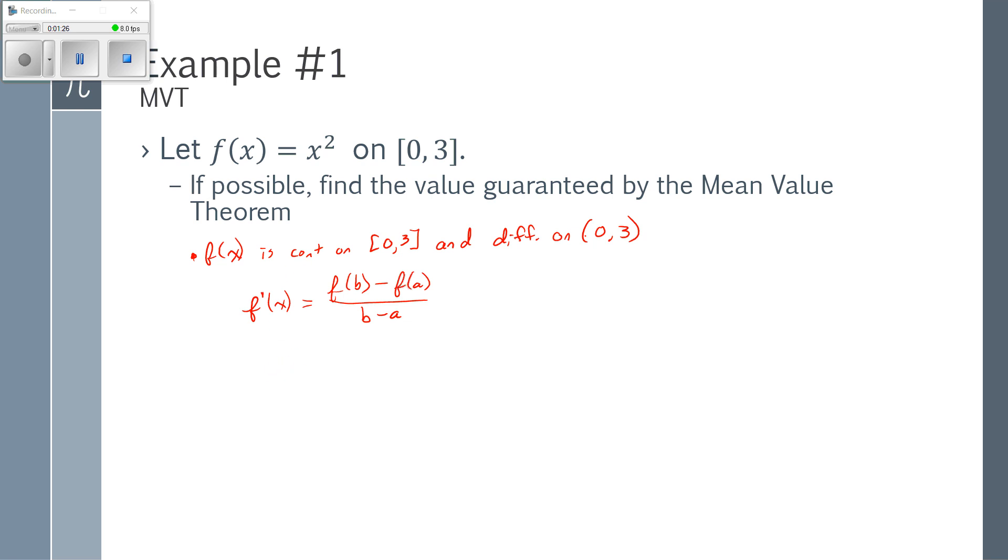So I know that the derivative of f is 2x. f of b is whatever f of 3 is minus f of 0 over 3 minus 0. So 2x, f of 3 is going to be 9, f of 0 is 0 over 3 minus 0. So I have 2x is equal to 3. So x is equal to 3 halves.